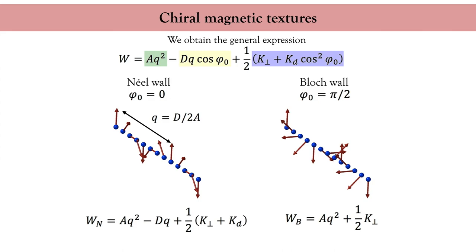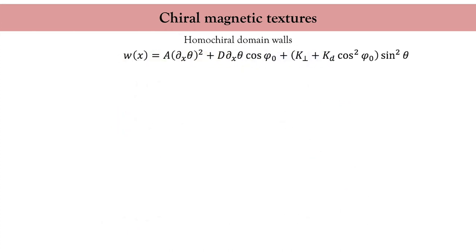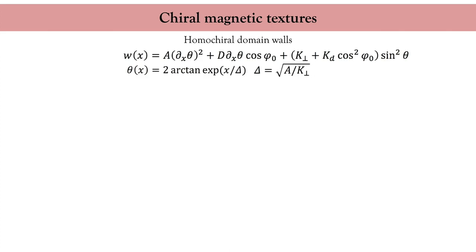Nonetheless, even in this configuration, the Dzyaloshinskii-Moriya interaction can play an important role. Let us consider a situation where exchange and anisotropy dominate and the ground state is ferromagnetic. For the Dzyaloshinskii-Moriya interaction to be active, you need to create some spin texture — let's implement a domain wall. If the Dzyaloshinskii-Moriya interaction is not too large, the profile of the wall is given by our previously derived expression, and the resulting energy shows a clear competition between the Dzyaloshinskii-Moriya interaction and the dipolar interaction depending on the azimuthal angle phi_0 of the wall.